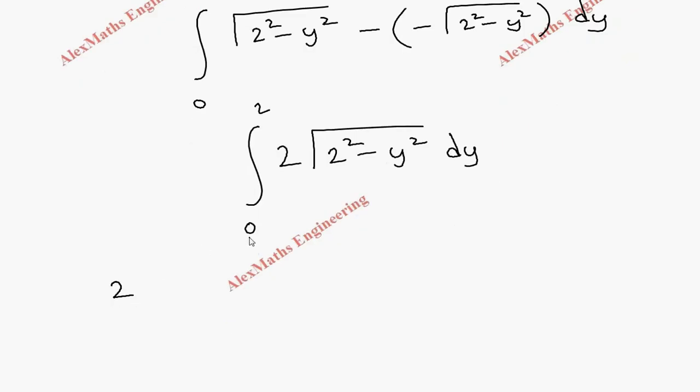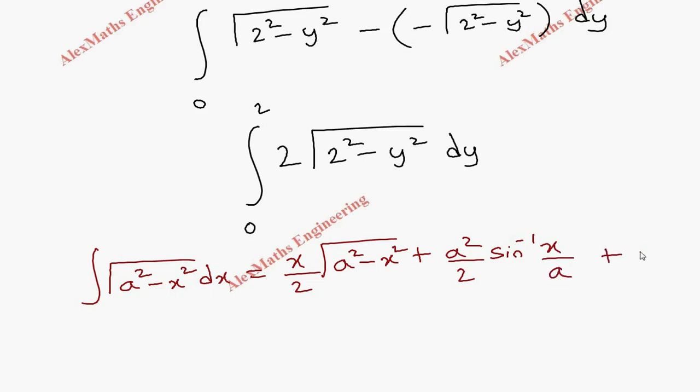Now we have a formula: integral √(a²-x²)dx equals (x/2)√(a²-x²) + (a²/2)sin⁻¹(x/a) + c. We are going to apply the formula for this term.